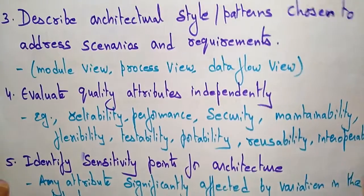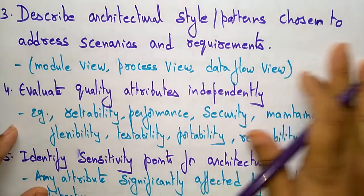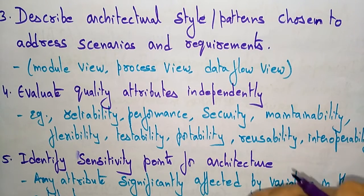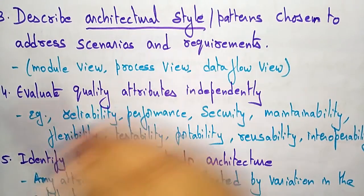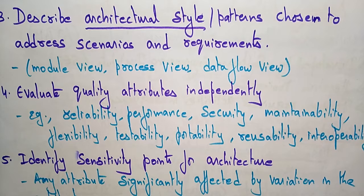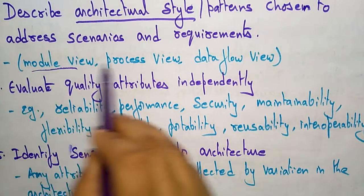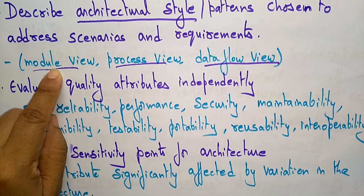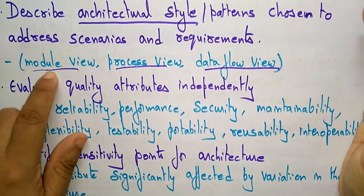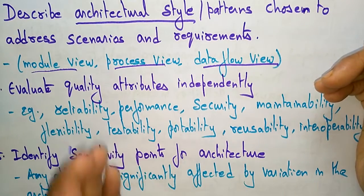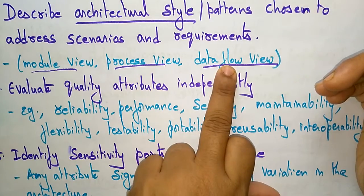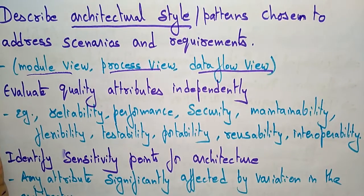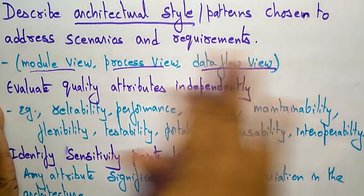After that, describe the architectural styles or patterns chosen to address the scenarios and requirements. They are introducing the architectural styles, following module view, process view, and data flow view. The requirements are represented in a module view, meaning the complete product is divided into different modules. How data is processed in each module is shown in the process view, and the data flow view represents everything in the architectural style.